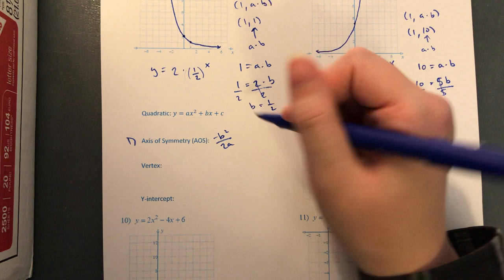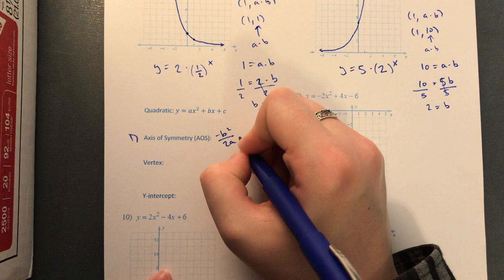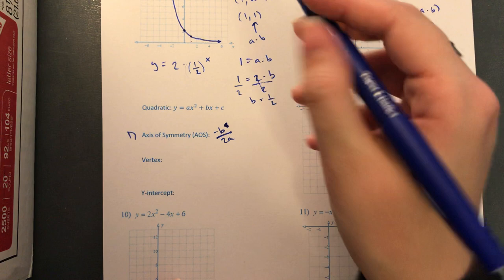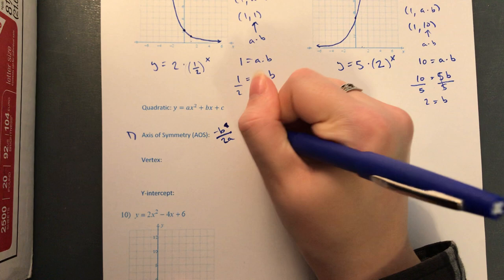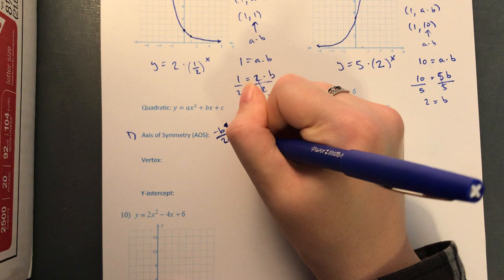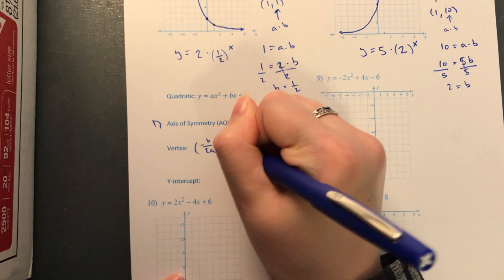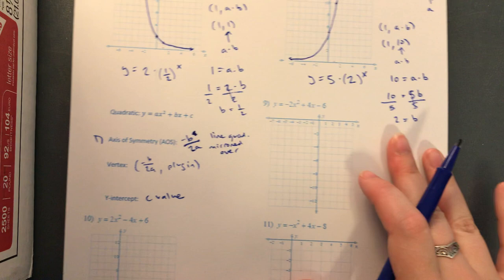The axis of symmetry is negative b over 2a — not the quadratic formula, which has a plus or minus. The axis of symmetry is the line that the quadratic is mirrored over. It tells you the x value of your vertex. So your vertex is negative b over 2a comma whatever you get when you plug that into the quadratic. The y-intercept is the c value. For most of this we use Desmos.